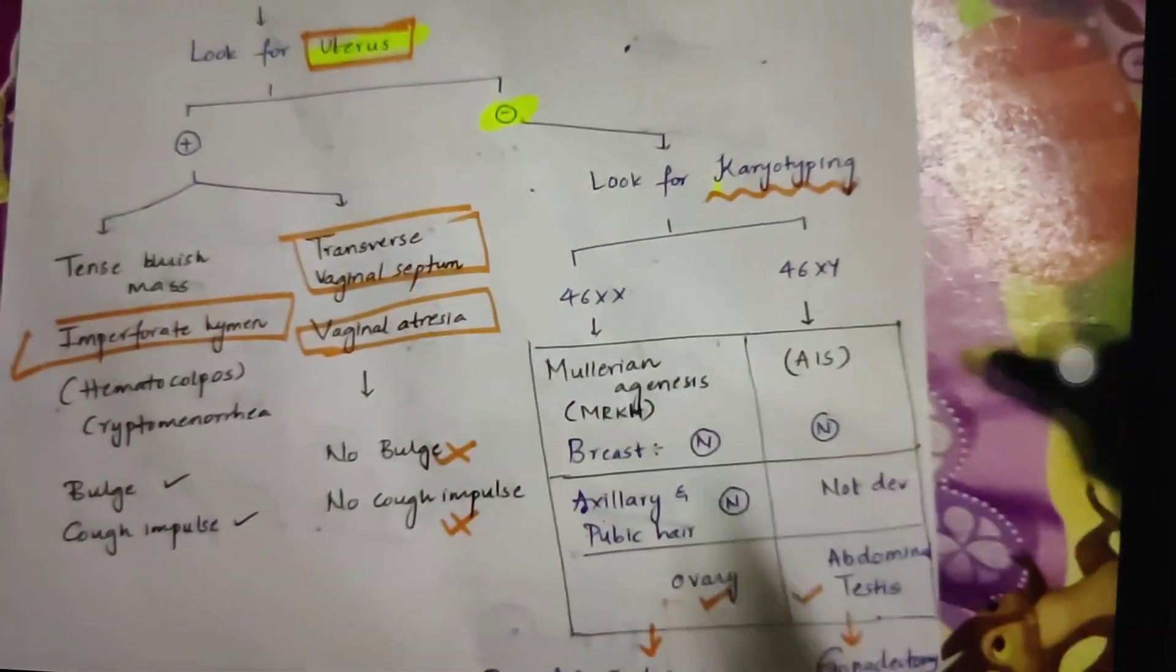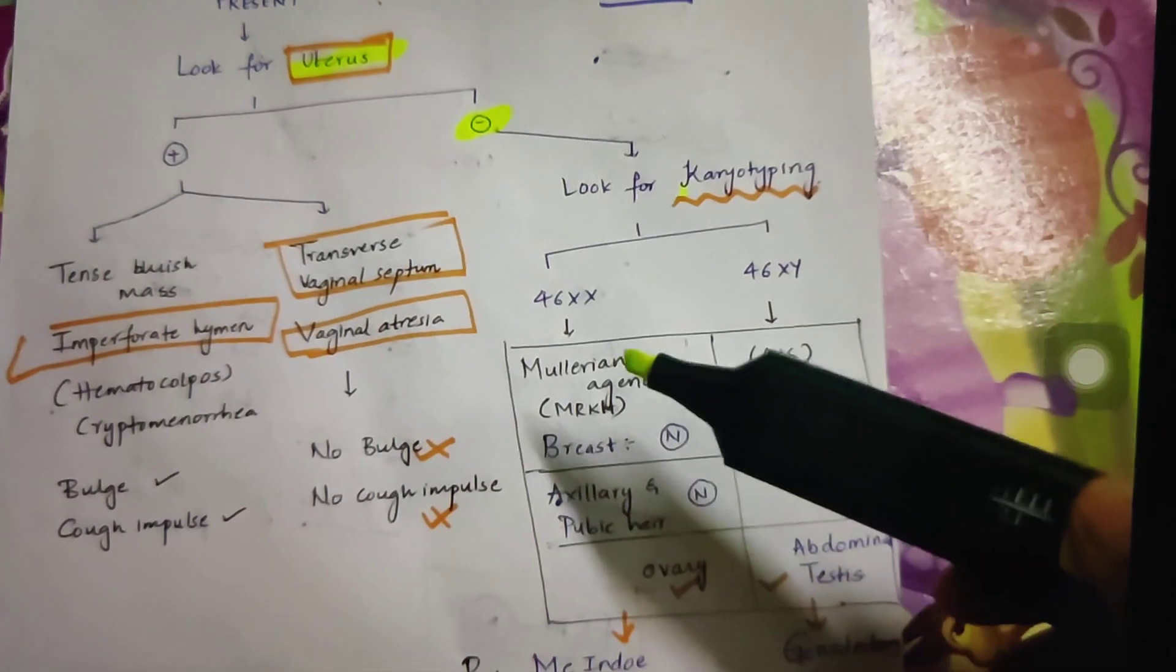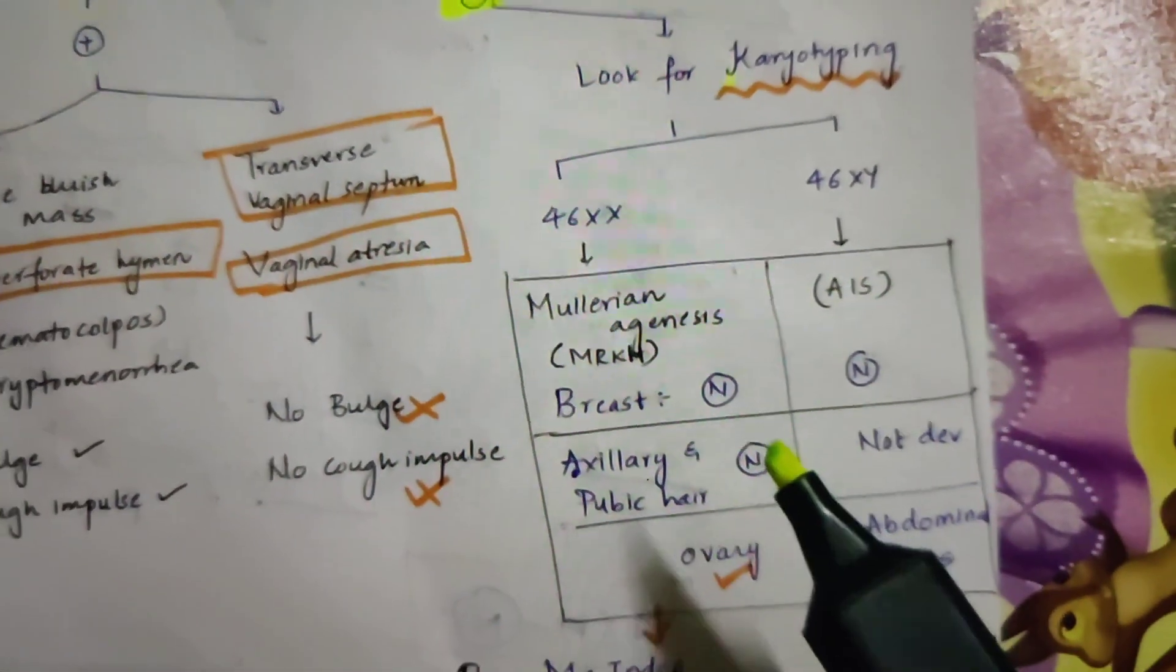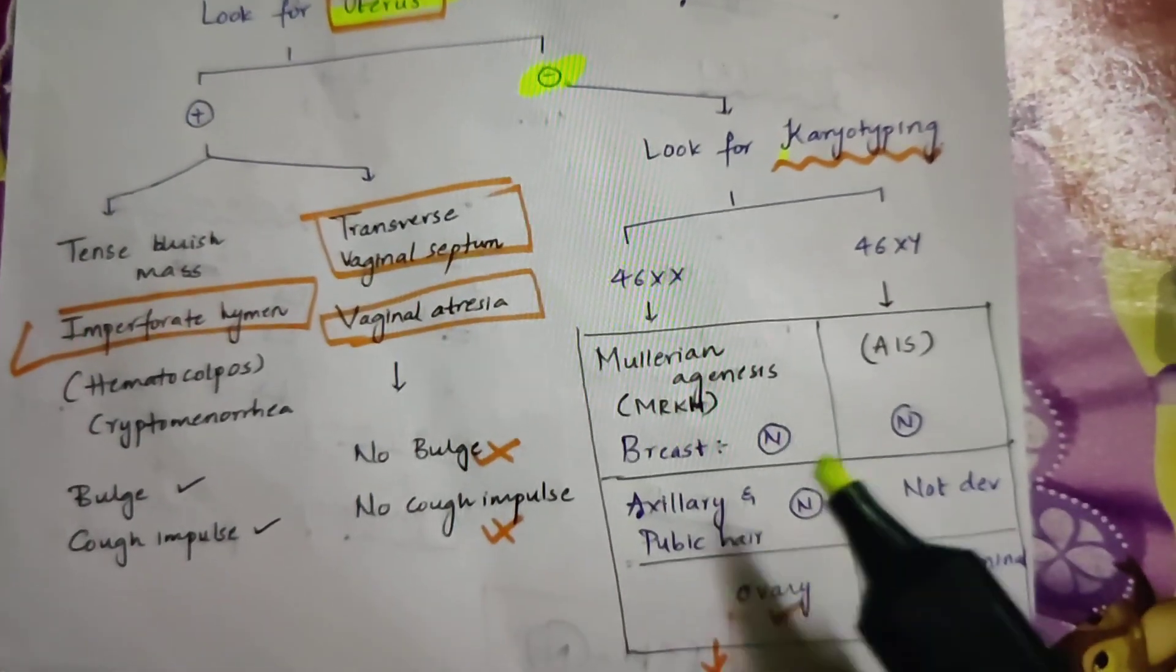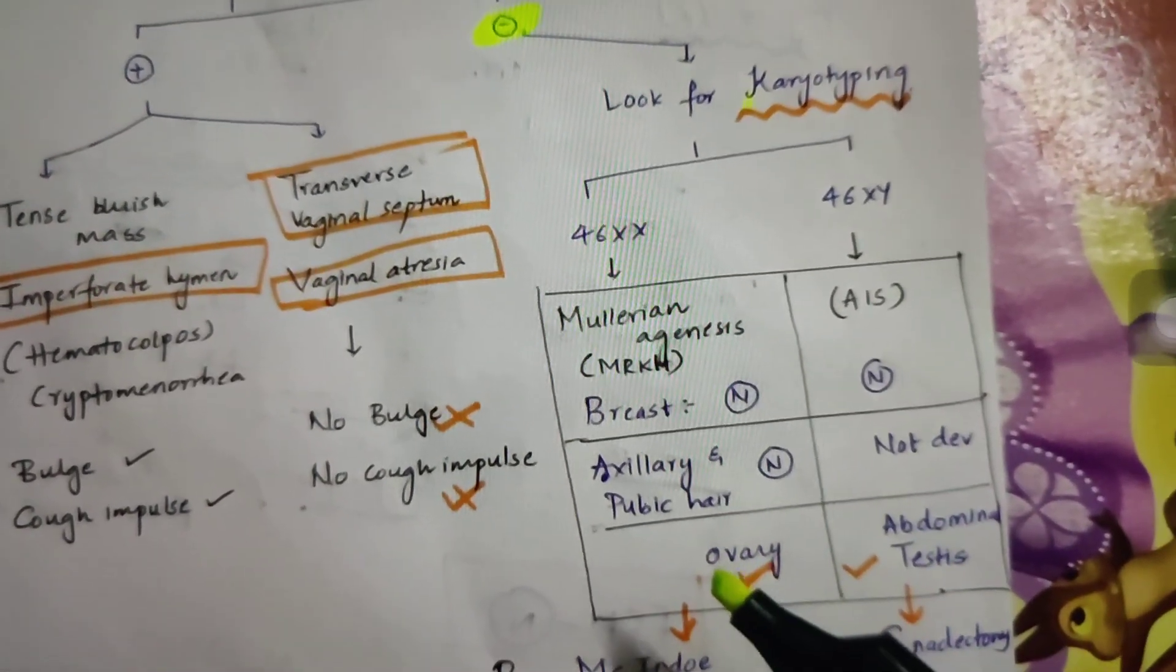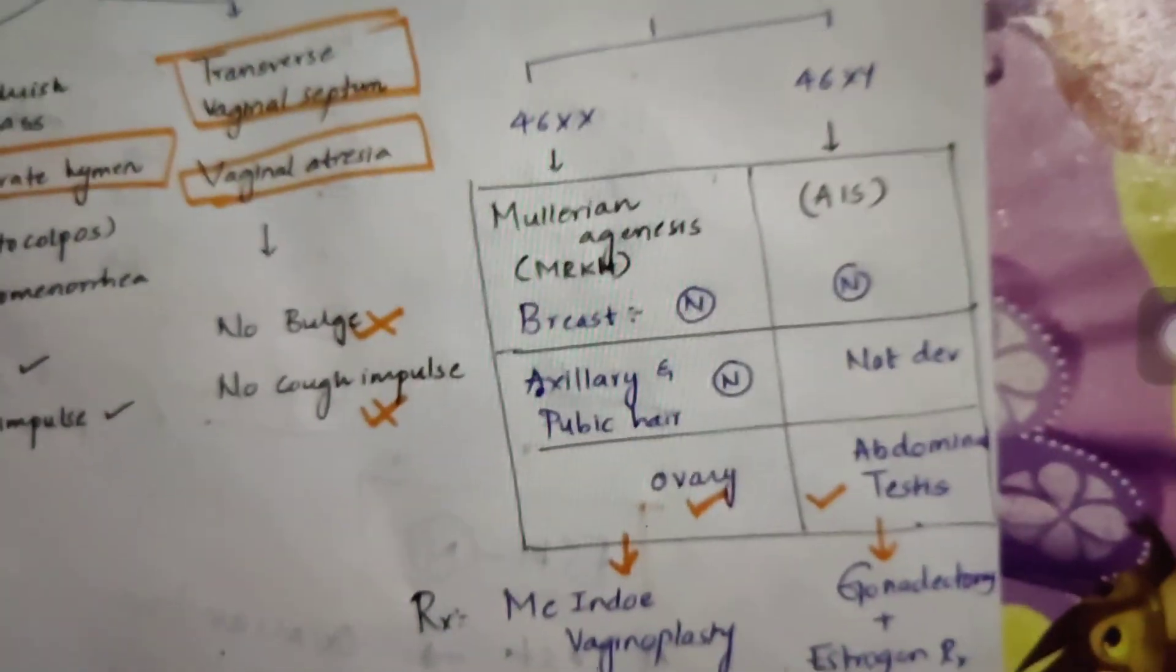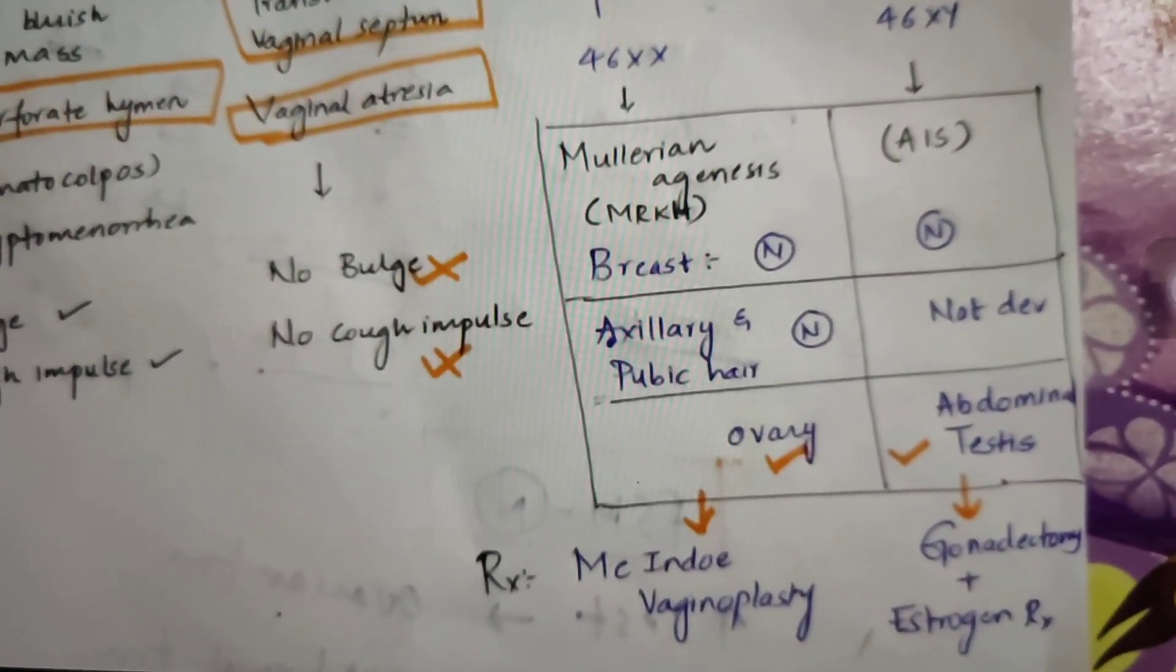Now coming to conditions where uterus is absent. When uterus is absent, you need to look for karyotyping. If it is 46XX or XY. If it is XX then it is Mullerian agenesis MRKH, Mayer-Rokitansky-Kuster-Hauser syndrome, or if it is XY then it is androgen insensitivity syndrome. In both conditions breast might be normal, but coming to axillary and pubic hair: in Mullerian agenesis axillary and pubic hair are normal, whereas in AIS they are underdeveloped or not developed. In Mullerian agenesis ovaries might be present, whereas in AIS testis might be present but they might show cryptorchidism, that is abdominal testis may be present. So you need to know the difference between Mullerian agenesis and AIS in detail. That's why I have written them in a tabular format.